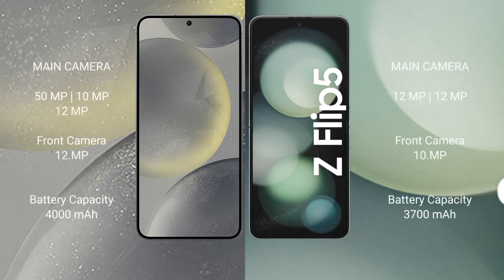The Samsung S24 features a triple rear camera setup: 50MP plus 10MP plus 12MP, and a 12MP front camera. The Samsung Galaxy Z Flip 5 features a dual rear camera setup: 12MP plus 12MP, and a 12MP front camera.